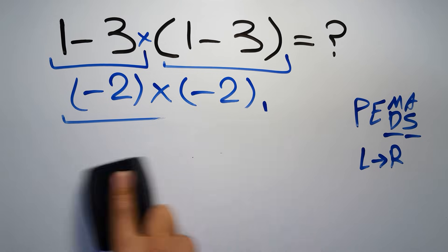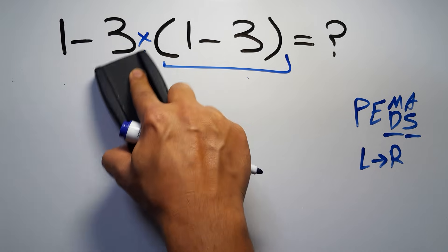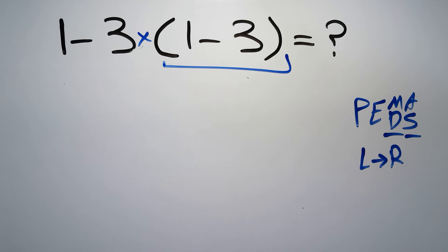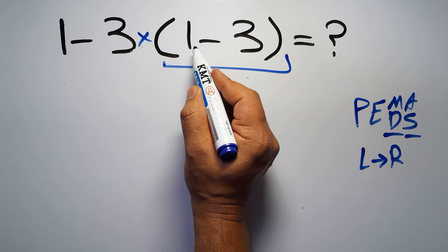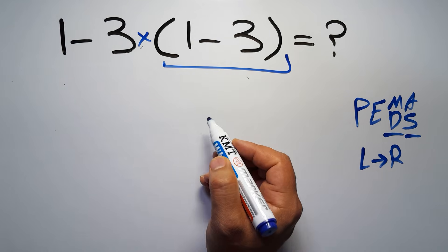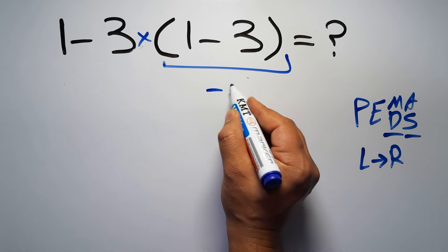So first this parentheses. Inside this parentheses we have 1 minus 3, which equals negative 2. So 1 minus 3 times negative 2.